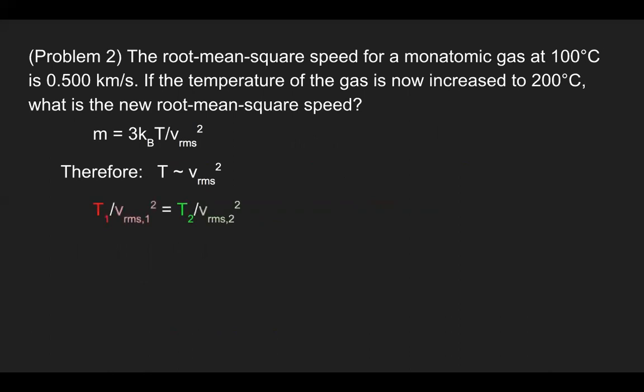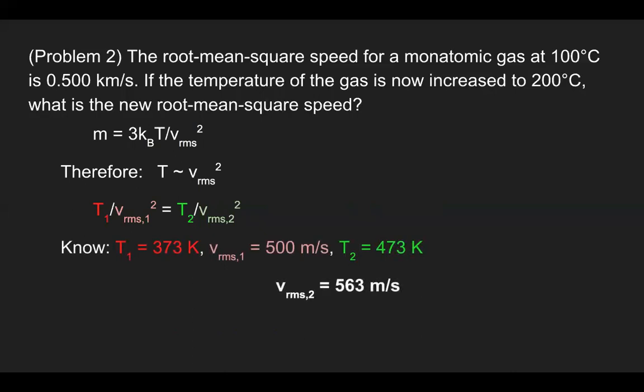We see that temperature is proportional to the square of the root mean square speed. So we can write T1 divided by V1 squared equals T2 divided by V2 squared. We already know most of the values, so solving for the RMS speed at scenario two gives us 563 meters per second.